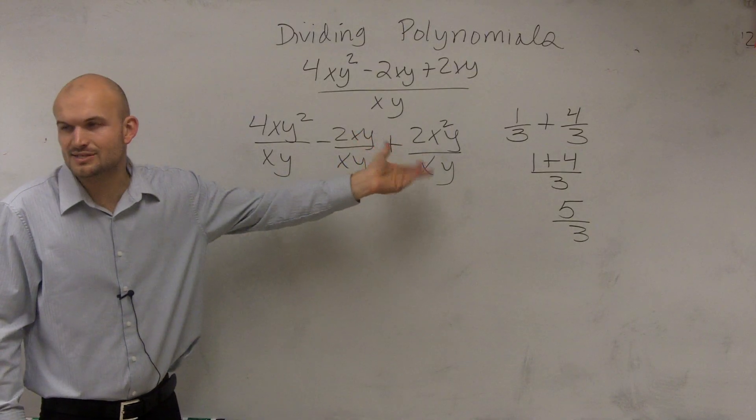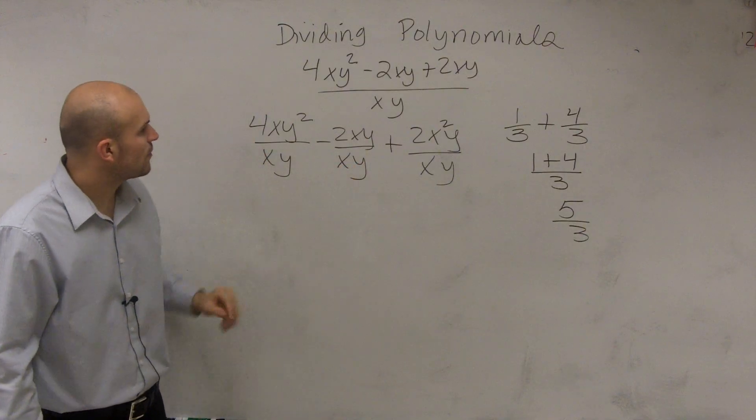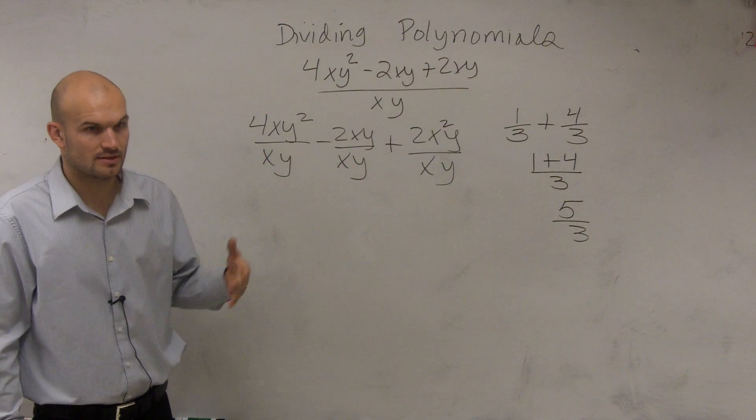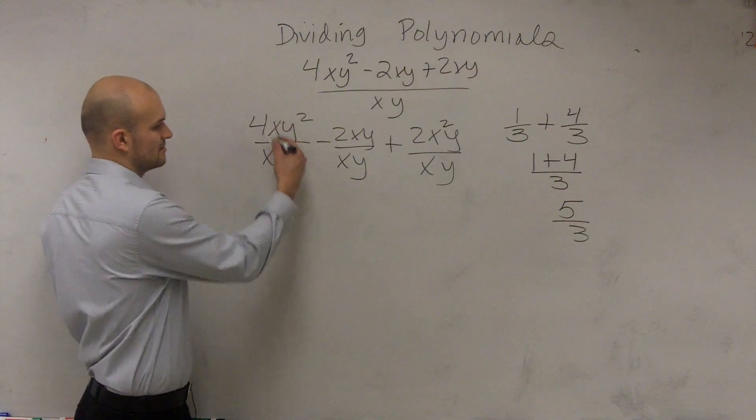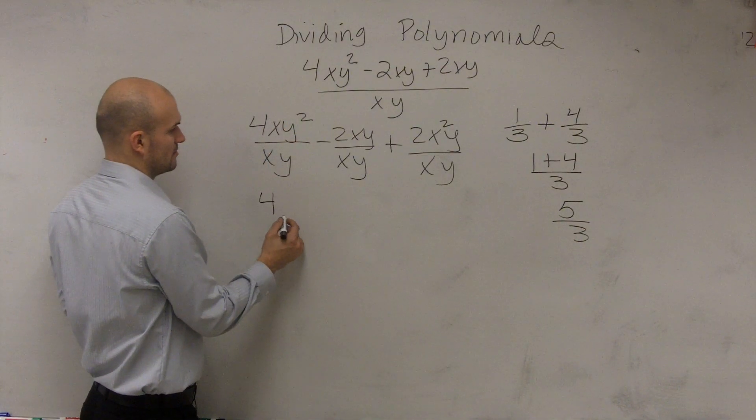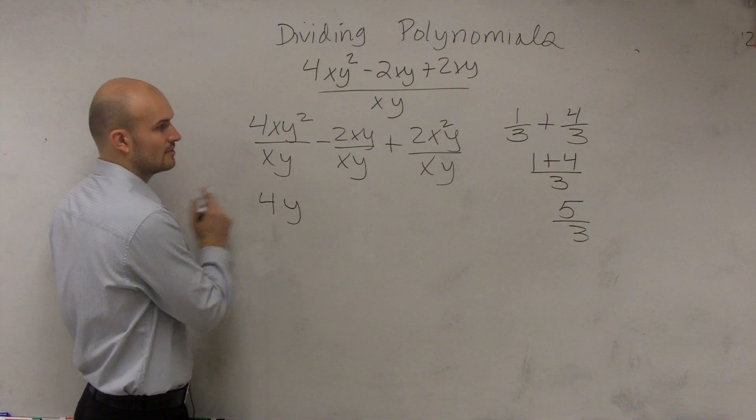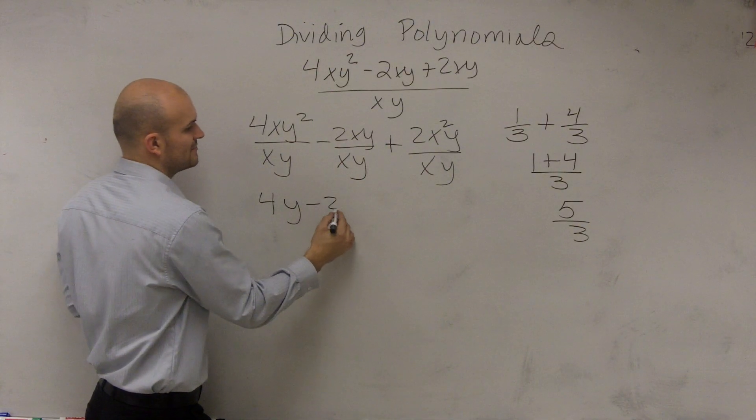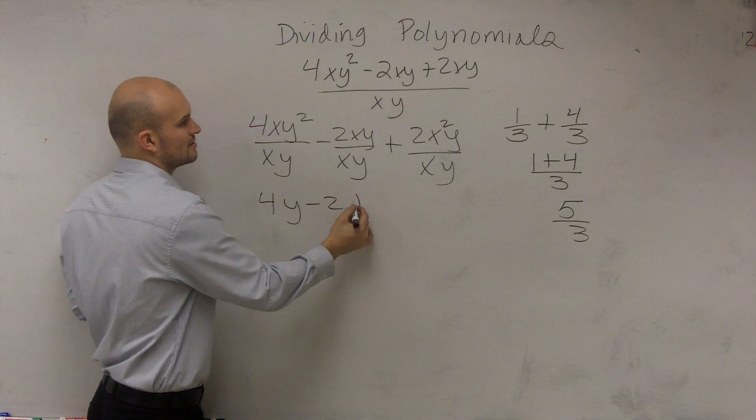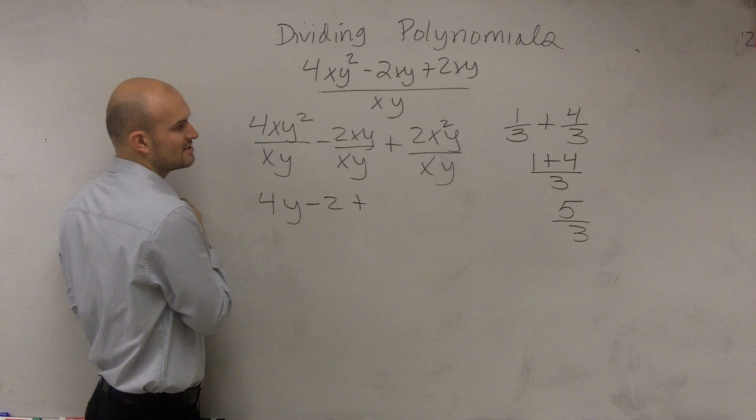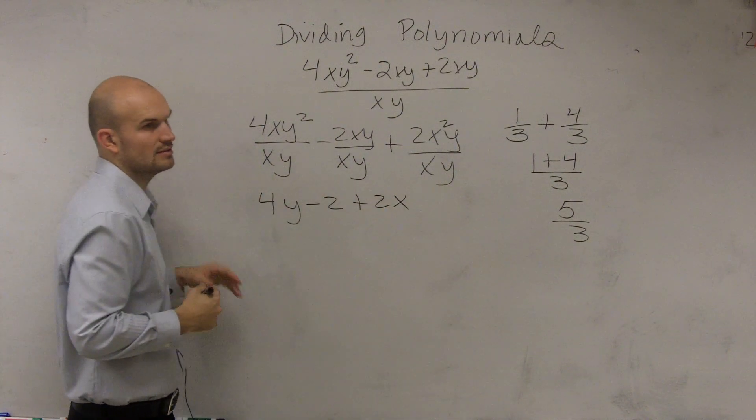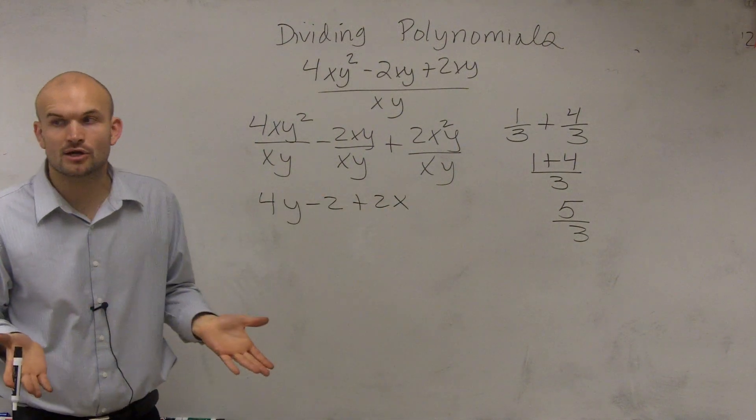So yeah, now they're not like terms, so you can't combine them. So you have 4xy² divided by xy. So now when you divide this, you're going to be left with 4y. Negative 2xy divided by xy is just going to leave you with a negative 2. And then we have plus 2x²y divided by xy is going to leave you with a 2x. Now you can see that these are not like terms.